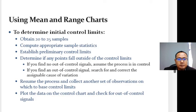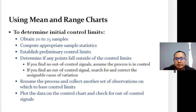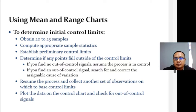Mean charts and range charts provide a different perspective on a process. Mean charts are sensitive to shifts in the process mean, whereas range charts are sensitive to changes in process dispersion. Because of this difference in perspective, both types of chart might be used to monitor the same process.